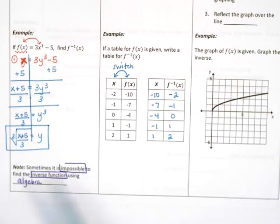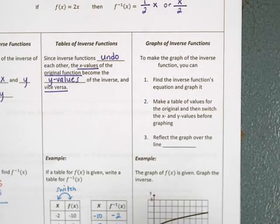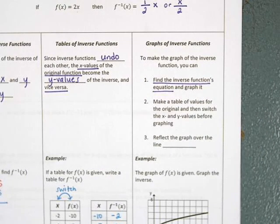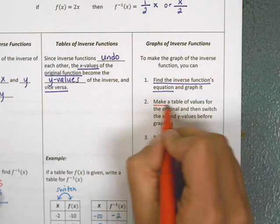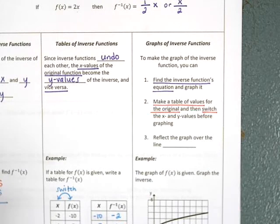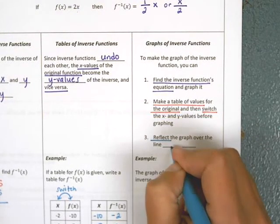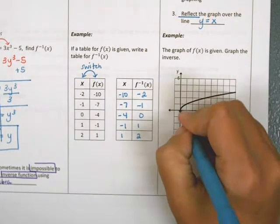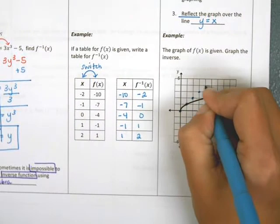Now let's look at graphs. To make the graph of an inverse function, you could find the inverse function's equation and graph it. But sometimes it's impossible to find that equation, so option 2 would be to make a table of values and switch them before graphing. Option 3, which I think is easiest, is to reflect the graph of the original over the line y = x. The line y = x starts at 0 with slope up 1, over 1.